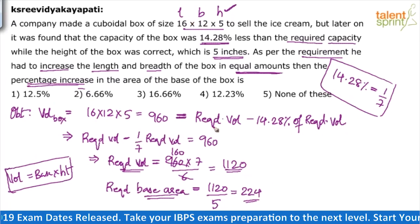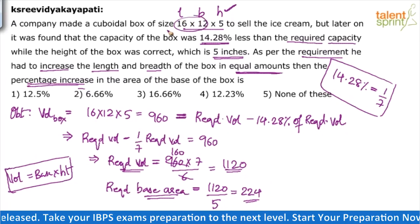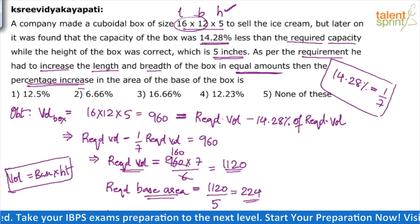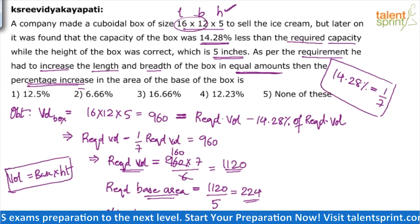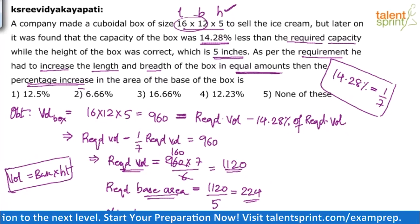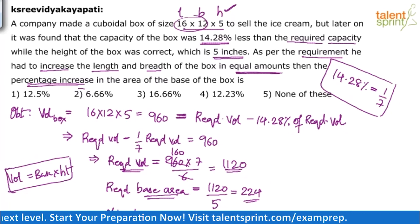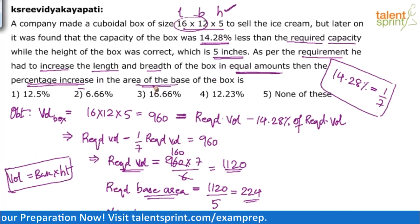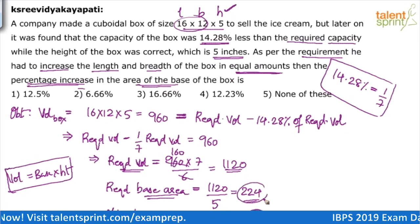What is the obtained base area? It is 16 × 12, which is 192. So the obtained base area is 192 and the required base area is 224. We now know both values and need to find the percentage increase in the area of the box.